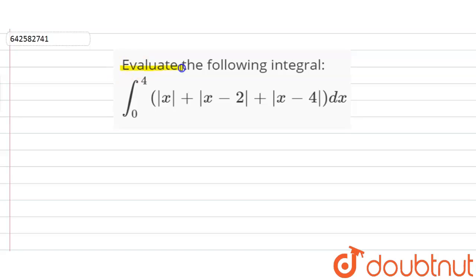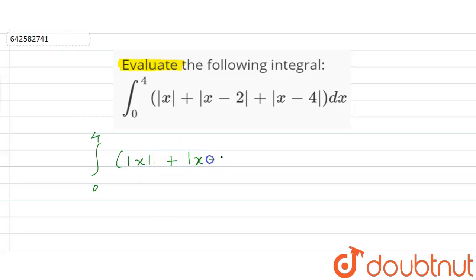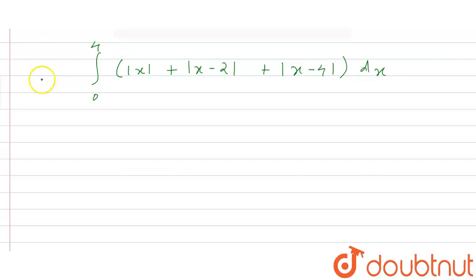So we have to evaluate the following integral. The integral given to us is: integral from 0 to 4 of modulus of x plus modulus of x minus 2 plus modulus of x minus 4, dx. Let this be I.